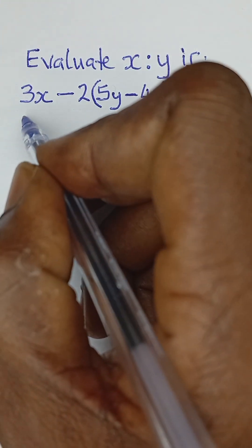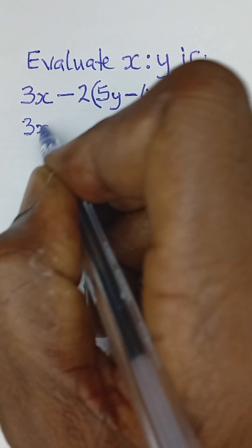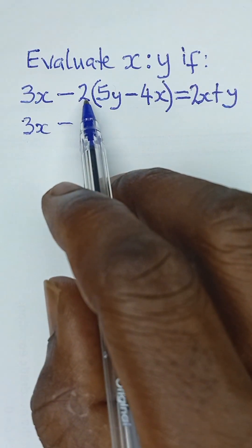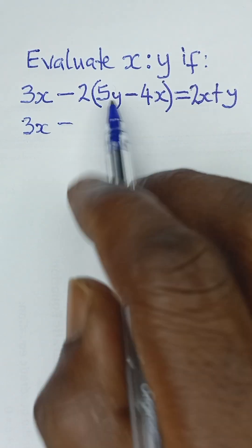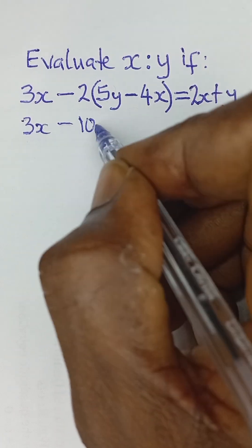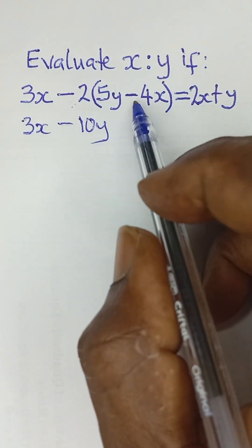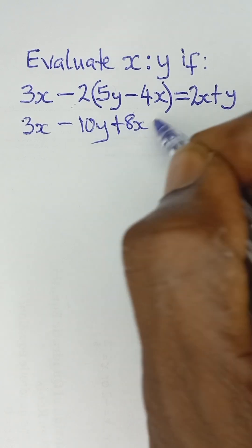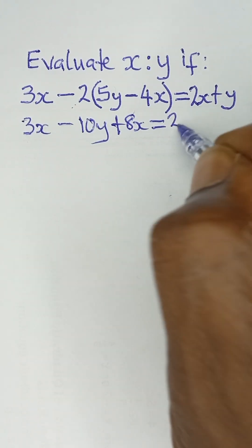Now let's simplify this, so we have 3x minus, negative 2 multiplied by 5y will give us negative 10y, negative 2 multiplied by negative 4x will give us positive 8x, and that will be equal to 2x plus y.